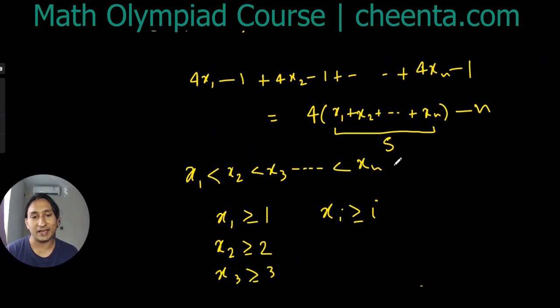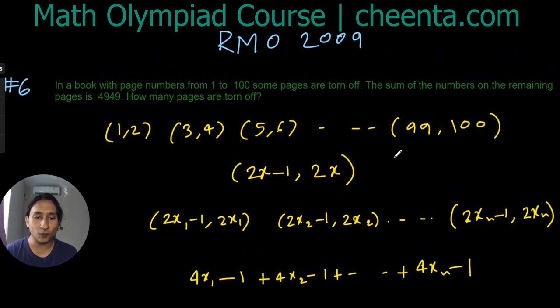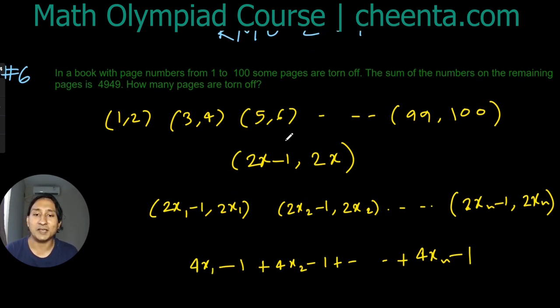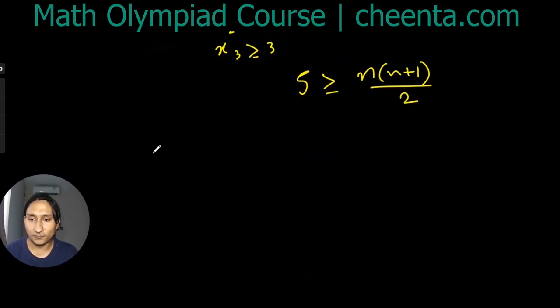Therefore the sum of the numbers that have been removed is 4 times S minus n. Now before removing the pages, the total was 5050 because that's the sum from 1 to 100.